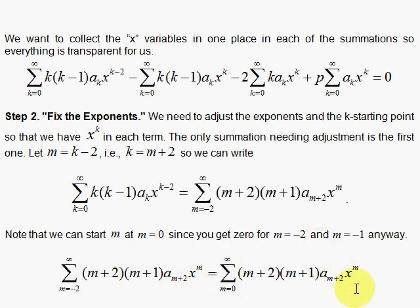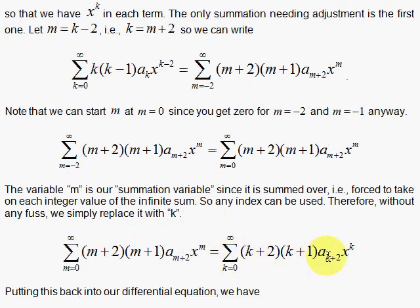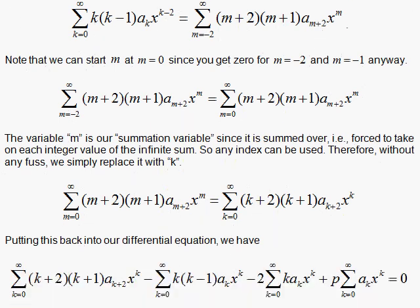Then we notice that the m is a summation variable. It could be anything. It could be n, it could be j. So we simply forget this definition back there and redefine k so that k equals m. And then we simply write the summation with the k's in there, and now we have our equation that has x to the k in all places.